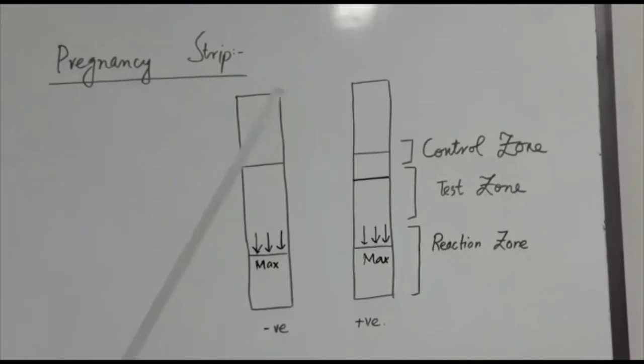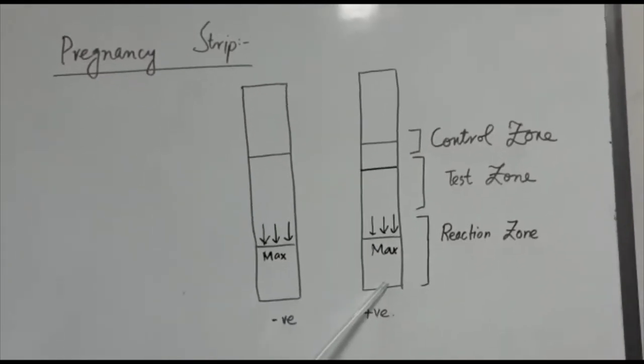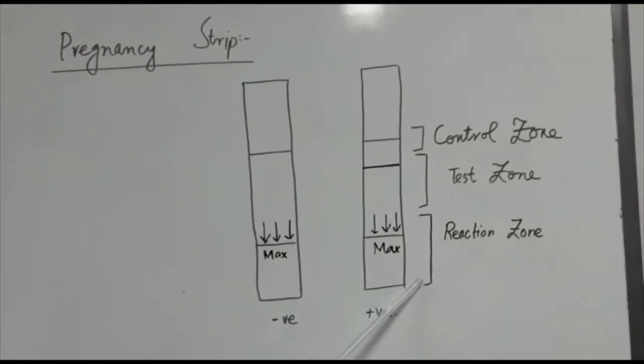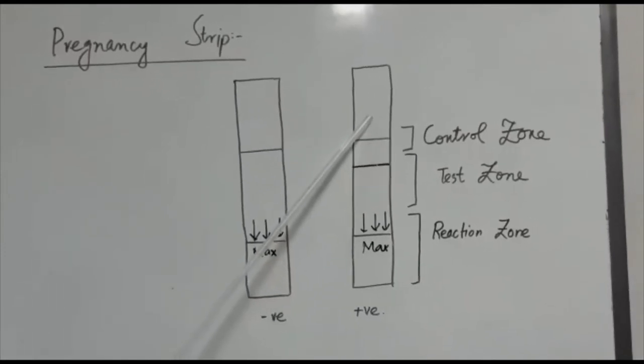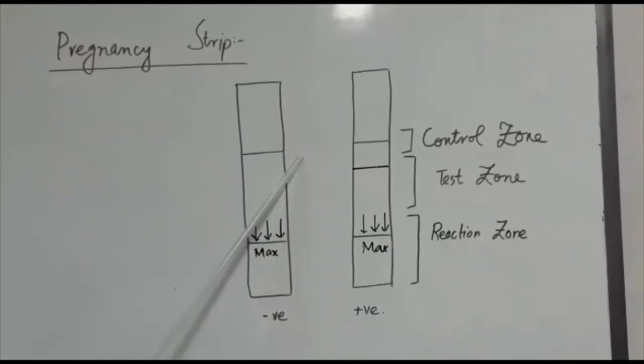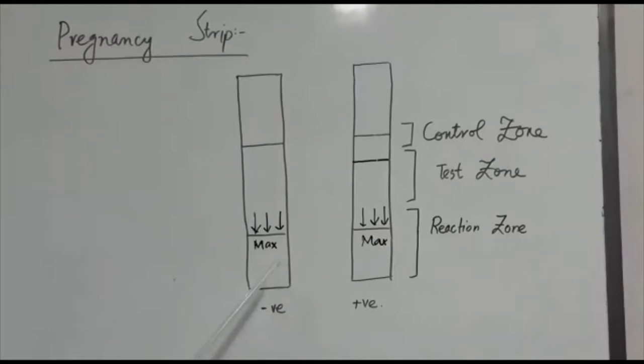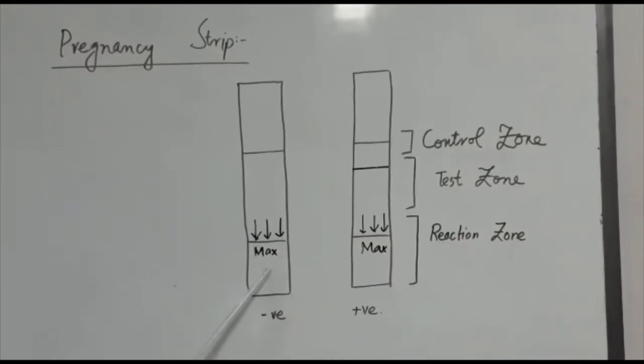In the absence of HCG in the urine, the enzymes will remain unbound but they will pass along the strip upward. If HCG is present, they will bind the enzymes placed in the reaction zone.